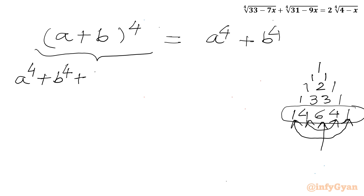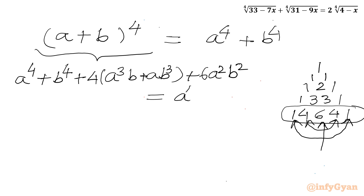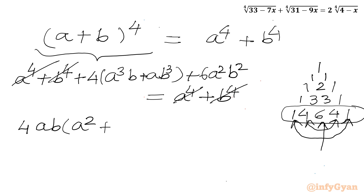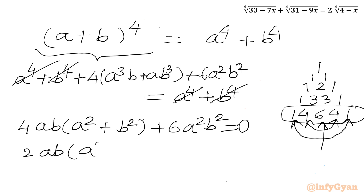Continuing the expansion: plus 4 times (a³b plus ab³) plus 6a²b². The right-hand side is a⁴ plus b⁴, so those terms cancel. We are left with 4ab(a² plus b²) plus 6a²b² equals 0. Dividing the whole equation by 2 gives 2ab(a² plus b²) plus 3a²b² equals 0.